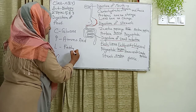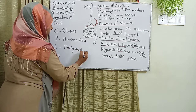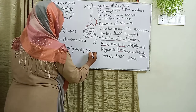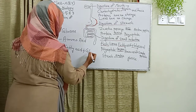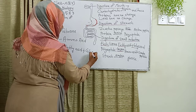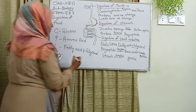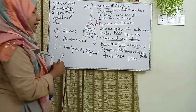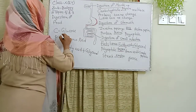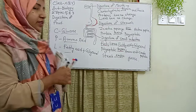So to summarize: first final structure is glucose, second is amino acid, and third is fatty acid and glycerol. When these food substances break down, carbohydrates yield glucose, proteins yield amino acids, and lipids yield fatty acids.